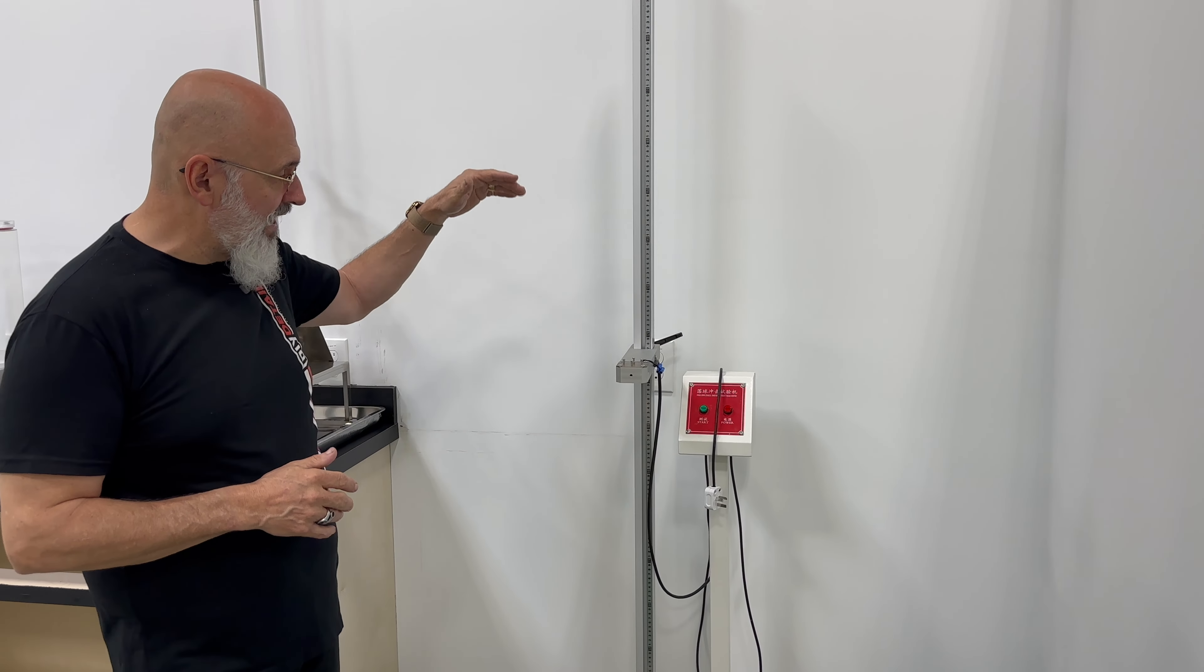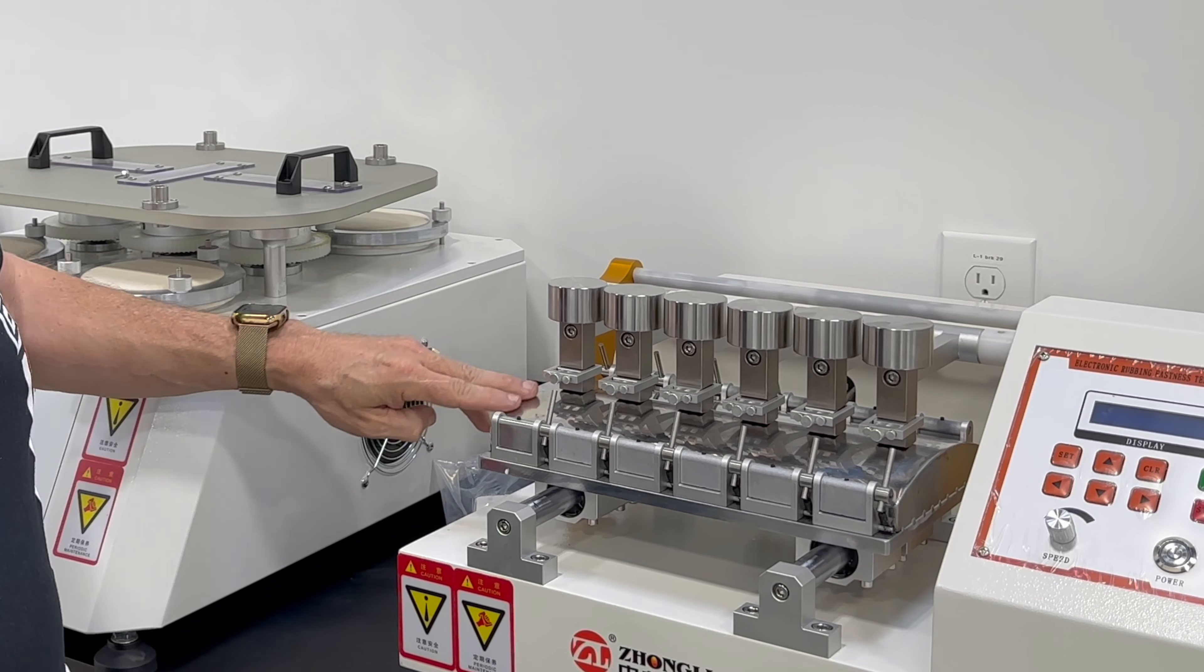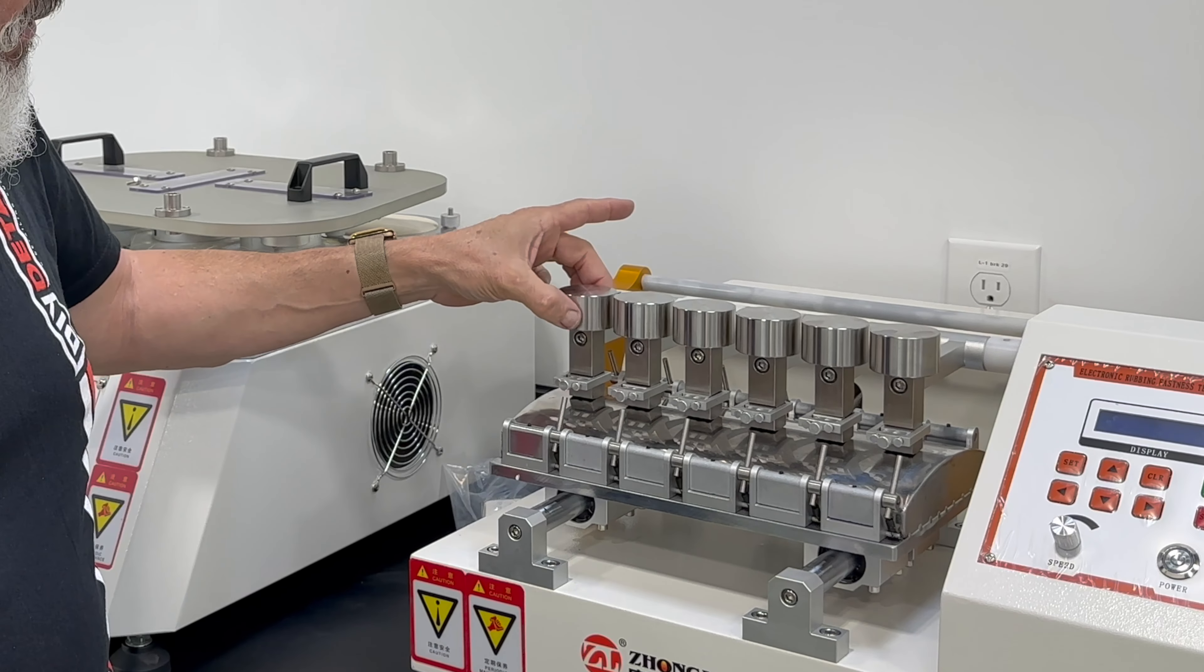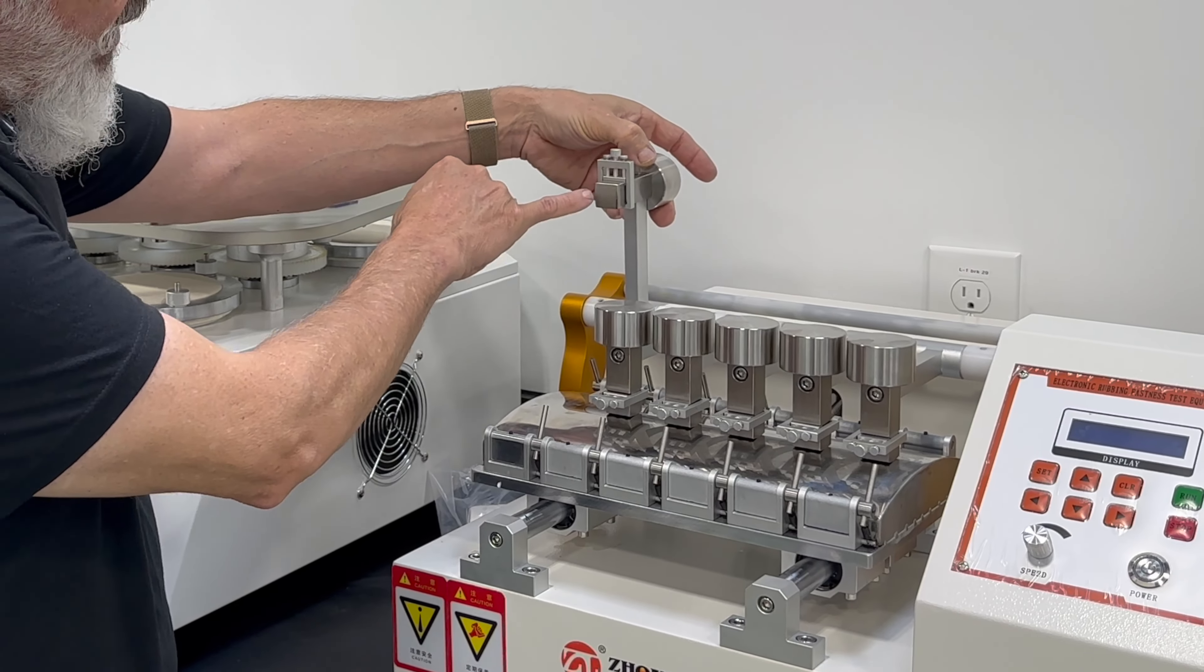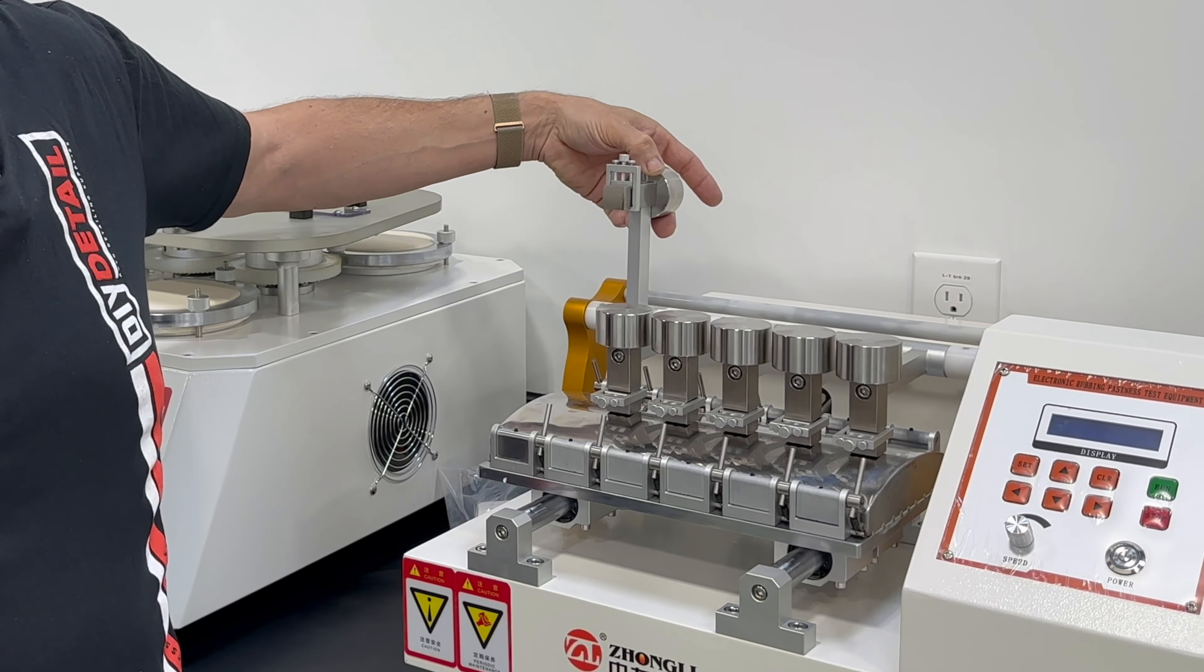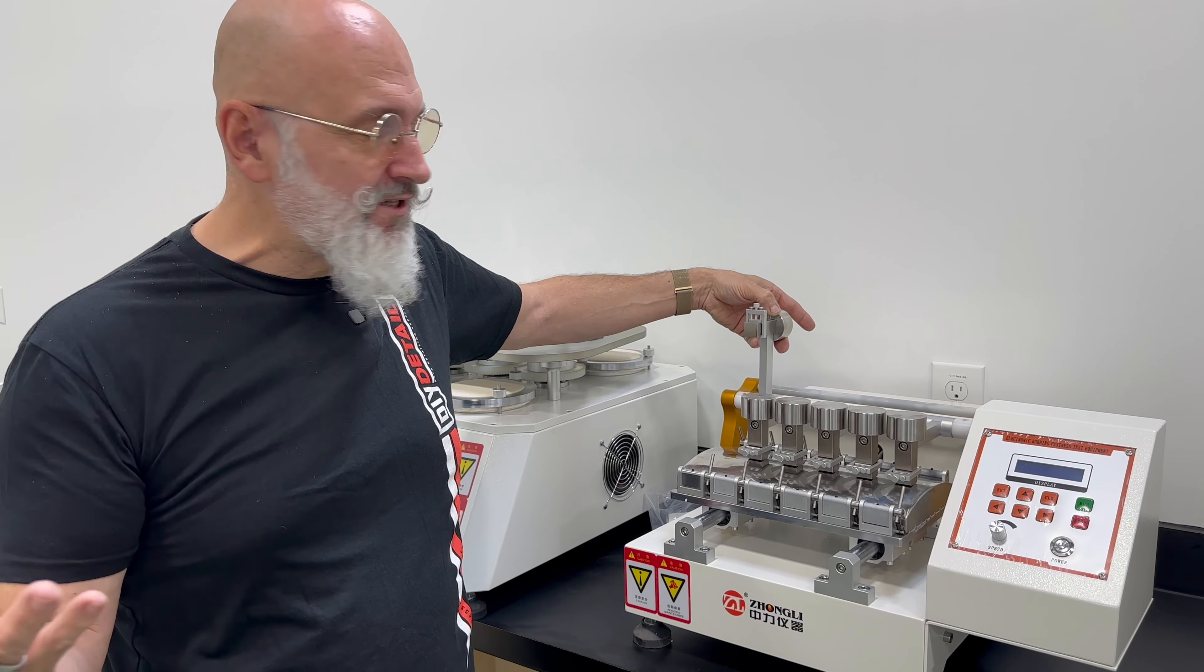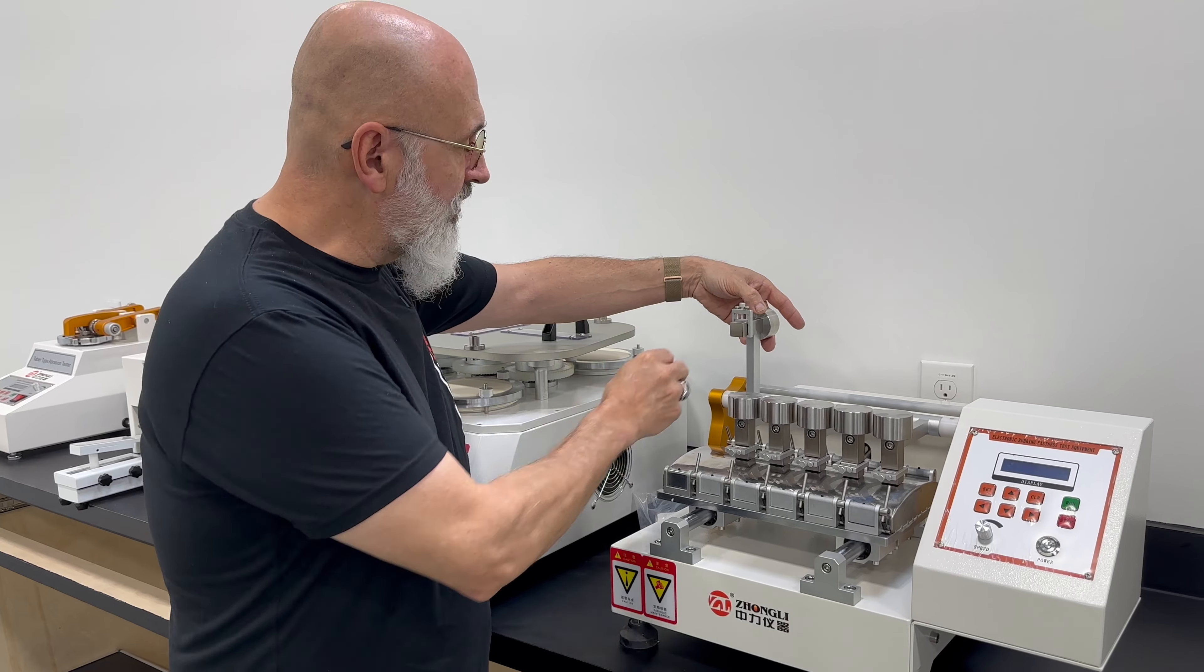This machine, very important for interior coatings. And the way this works is you'll put a piece of leather or whatever fabric you're wanting to test on this platen here. Then in these little holders, you put another piece of, let's say a jean. You want to check for jean transfer, jean dye transfer. You'll put it on here.